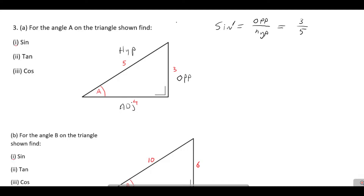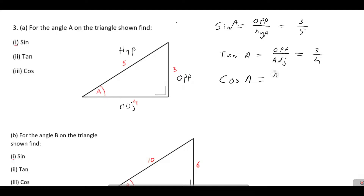Next, tan of A: tan is opposite over adjacent, so that's three over four. Finally, cosine of A is adjacent over hypotenuse — you can see that's four over five.